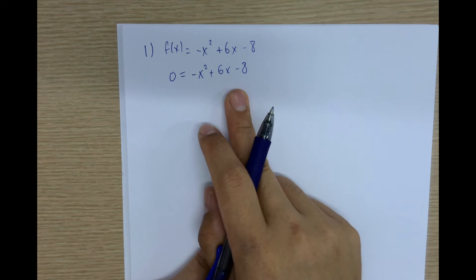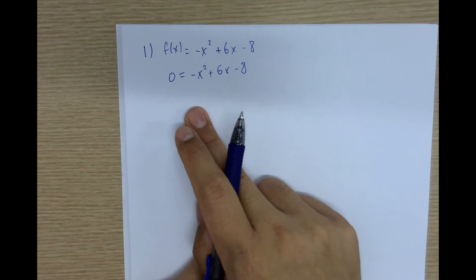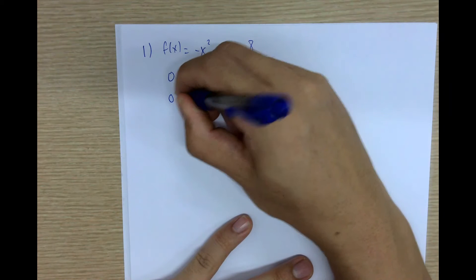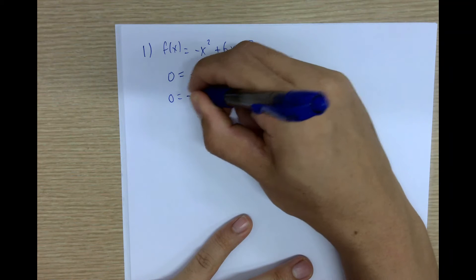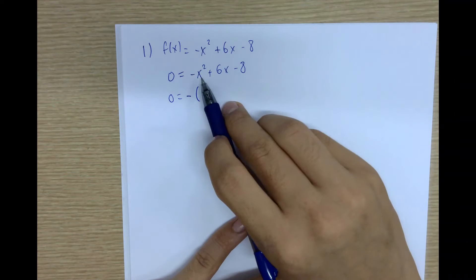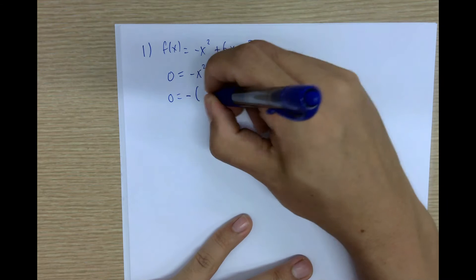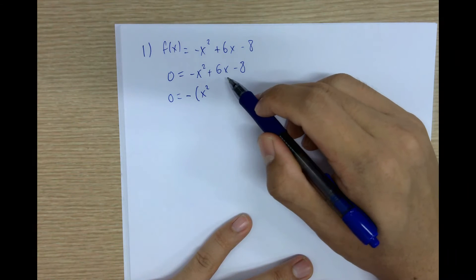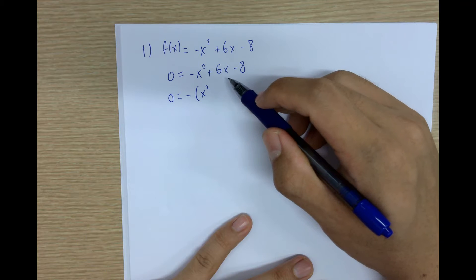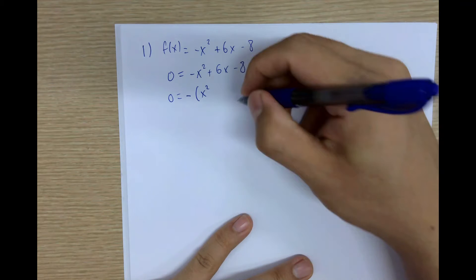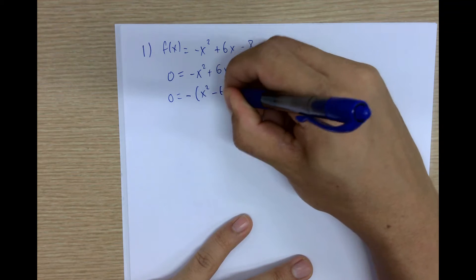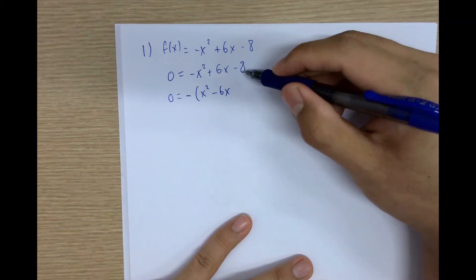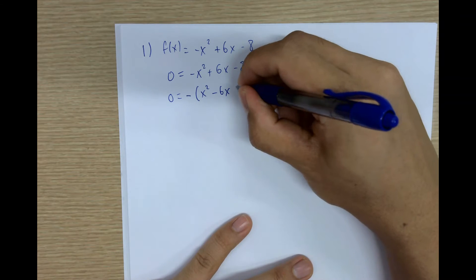If this was on the left-hand side, then we'd factor from everything on the left-hand side. So we factor out a negative: from x squared this becomes x squared, from positive 6x this becomes negative 6x, and from negative 8 this becomes positive 8.